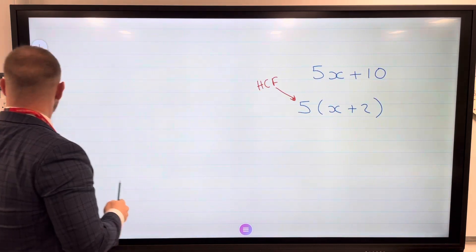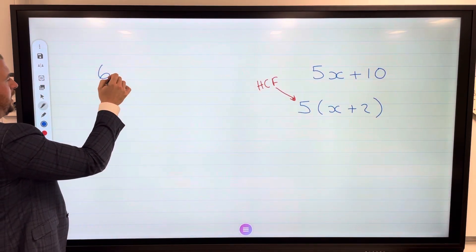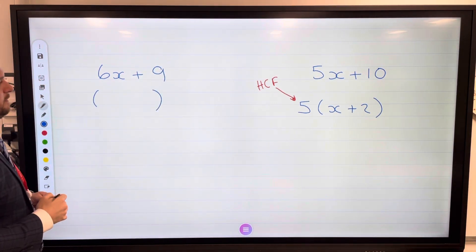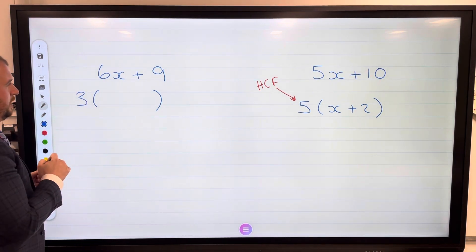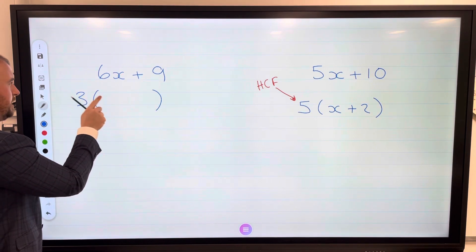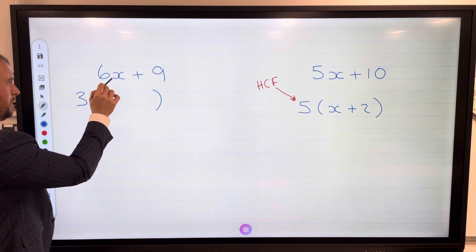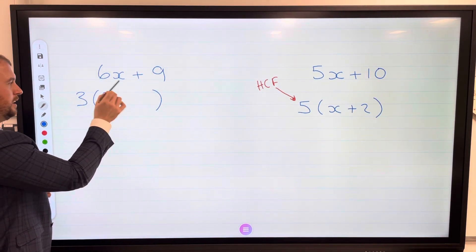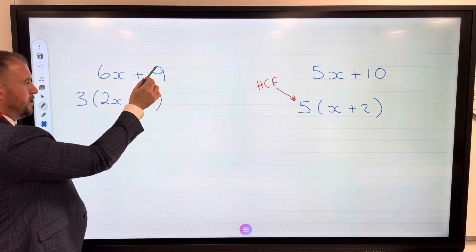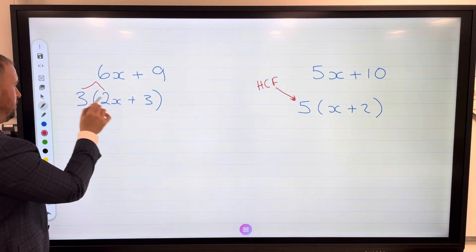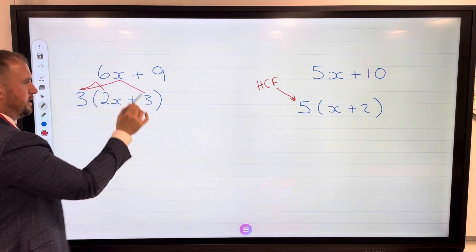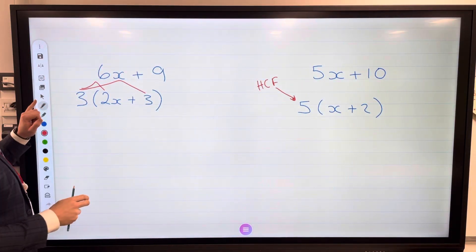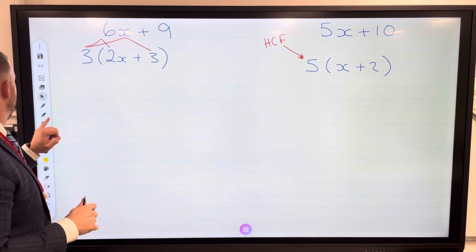If I wanted to factorize, let's say, 6x plus 9, let's pick our highest common factor of 6x and 9, which is 3. I'm looking at the 6x first: 3 times 2 is 6, but I haven't used this x yet, so 3 times 2x must be 6x, and then 3 times 3 must be 9. Let's just check it: 3 times 2x, 6x, yes that's right. 3 times 3 is 9, done, factorized.